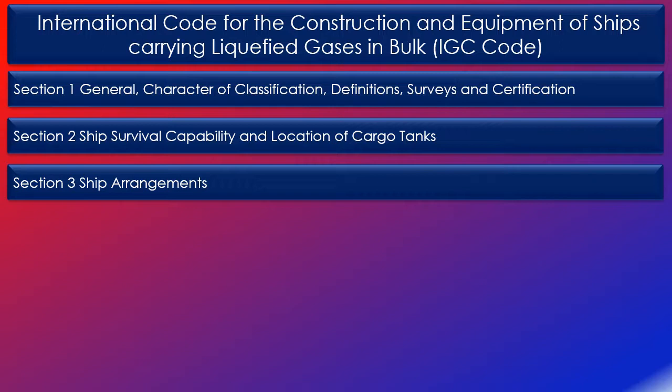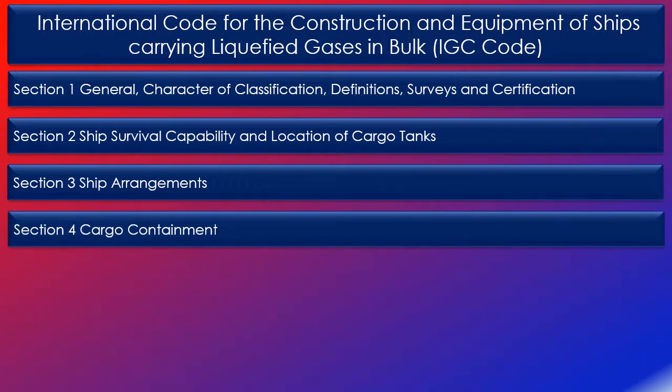Section 3 also discusses bow and stern loading and unloading arrangements. Section 4 on cargo containment defines the tank types such as membrane tanks, semi-membrane tanks, and independent tanks, besides setting out the requirements for design loads, structural analysis, allowable stresses, corrosion allowances, secondary barriers, insulation, construction and testing of cargo tanks, and separation of cargo tanks.